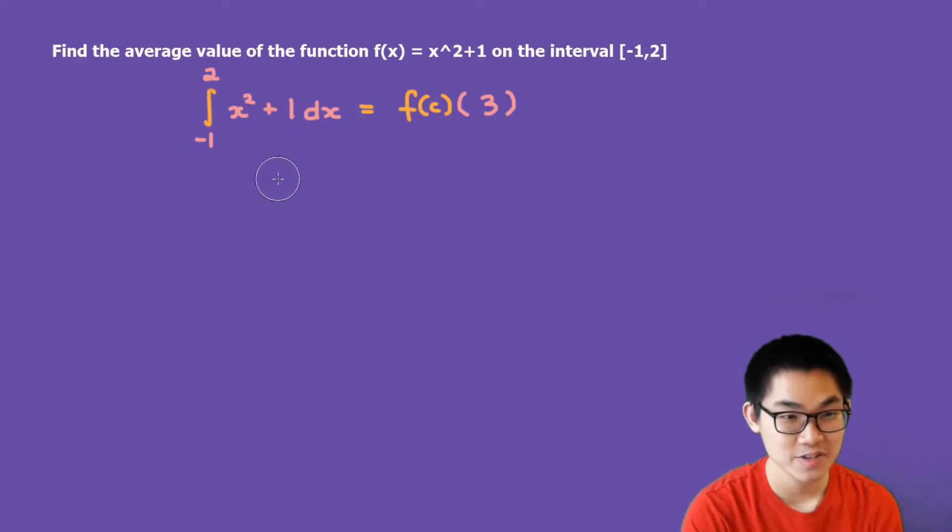So this integral is equal to 6, and we can just replace this with number 6. And then we divide both sides by 3. We get f of c is equal to 2.